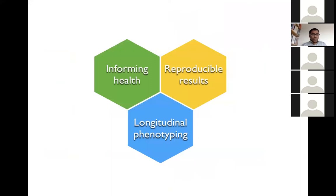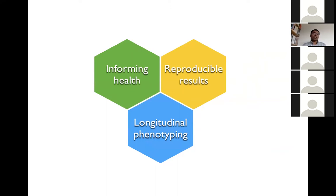To give a bit of background on what my group works on: we look at trying to inform health, primarily focused on mental health and neurodegenerative disorders. This includes predicting treatment outcomes and tracking changes in mental health over time. We're interested in ensuring our results are reproducible and generalizable, so we develop analytic platforms. We also work on longitudinal phenotyping — tracking information about individuals over time from sensors such as mobile phones, wearables, and brain images.